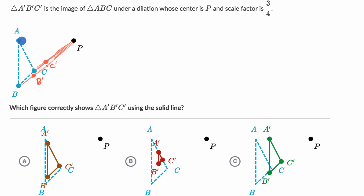And then on this line, halfway is roughly there. I'm just eyeballing it. So 3 fourths is there. So A prime, A prime should be there.